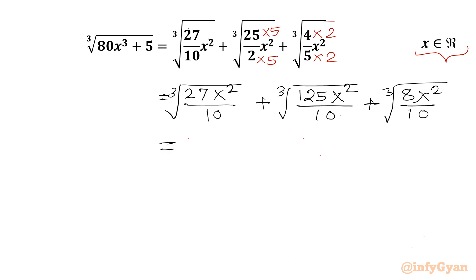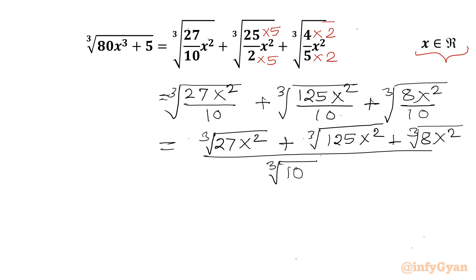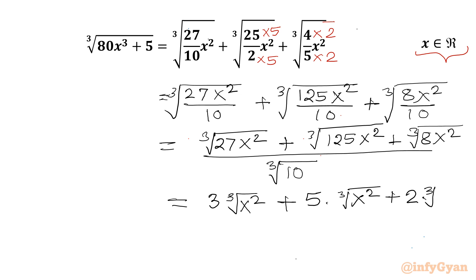Now I will take cube root of 10 as a common denominator. The numerator will be cube root of (27x²) plus cube root of (125x²) plus cube root of (8x²). Now cube root of 27 is 3, so we write 3 times cube root of x², plus 5 times cube root of x², plus 2 times cube root of x². And the denominator is cube root of 10.